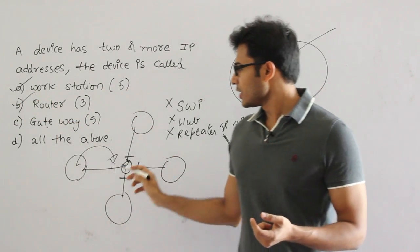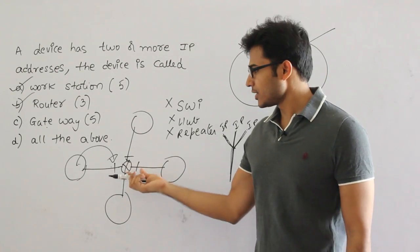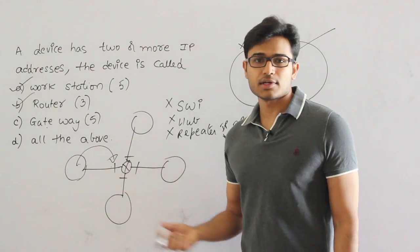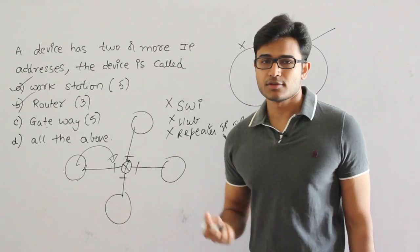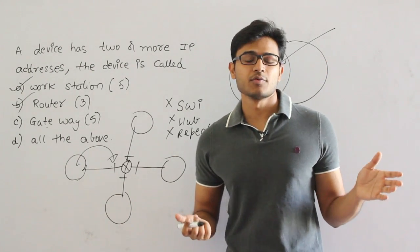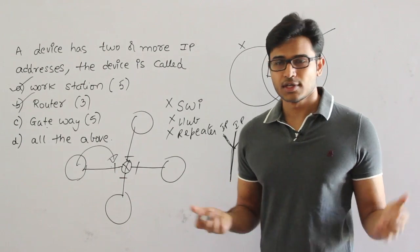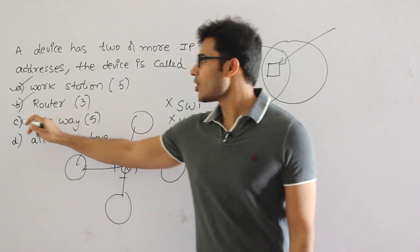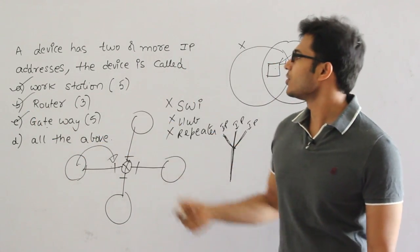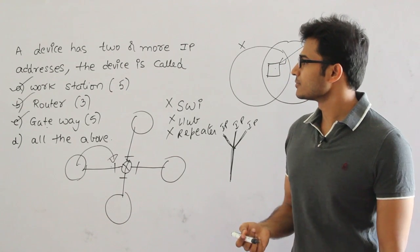What about a gateway? Gateway is simply an extension to router. Routers are generally used to connect networks, and gateways can also be used to connect networks. If a router is capable of getting more than one IP address for every interface, a gateway obviously will get it too. So all the devices are capable of getting more than one IP address.